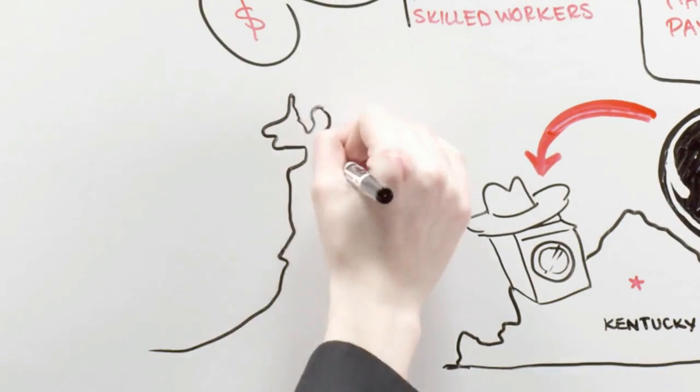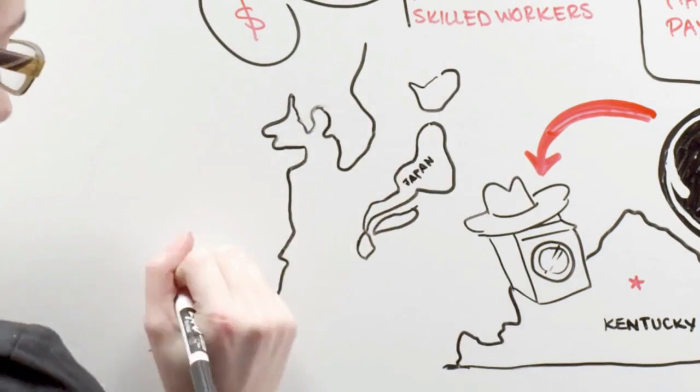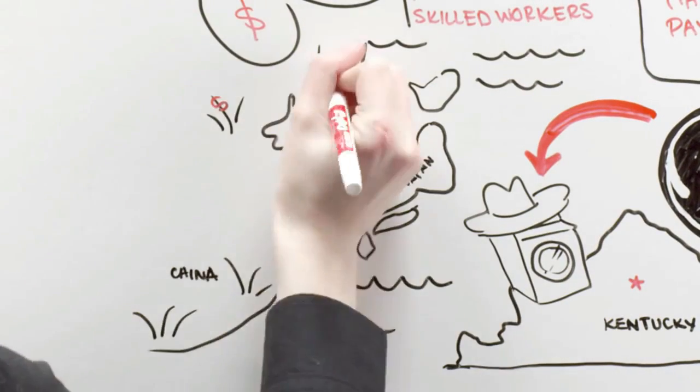Besides higher overseas costs, other factors bolster the argument that the grass isn't always greener in India, China, or Malaysia.